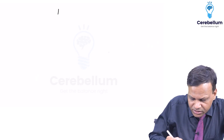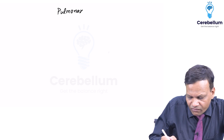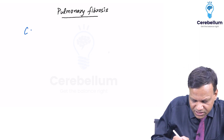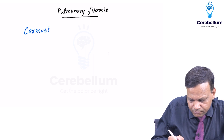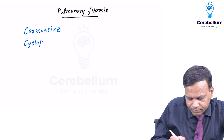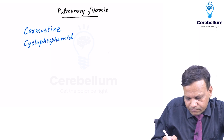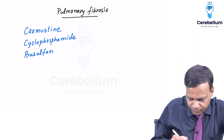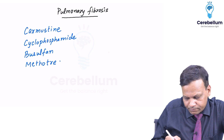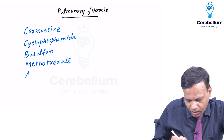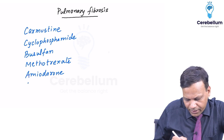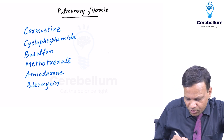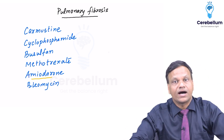You need to remember which drugs cause pulmonary fibrosis. The important drugs are carmustine, cyclophosphamide, busulfan, methotrexate, amiodarone, and bleomycin. Apart from amiodarone, which is an antiarrhythmic drug, all others are anti-cancer drugs.